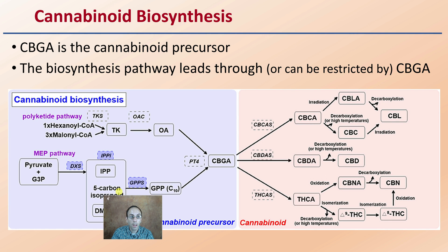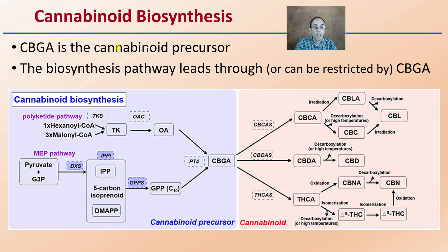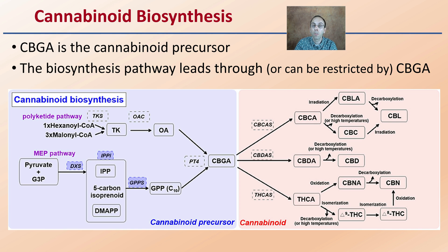Lastly, looking at the cannabinoid biosynthesis pathway, CBGA is a cannabinoid precursor. We see all these cannabinoid processes going through, all arrows leading to CBGA, and then from there, all arrows coming from CBGA. This biosynthesis pathway leads through, or at least can be restricted by, CBGA. This is why it's an important precursor to understand — not only how plants produce it, but how it goes on to produce other compounds in the plant. That restriction point can be vital and great for future research.